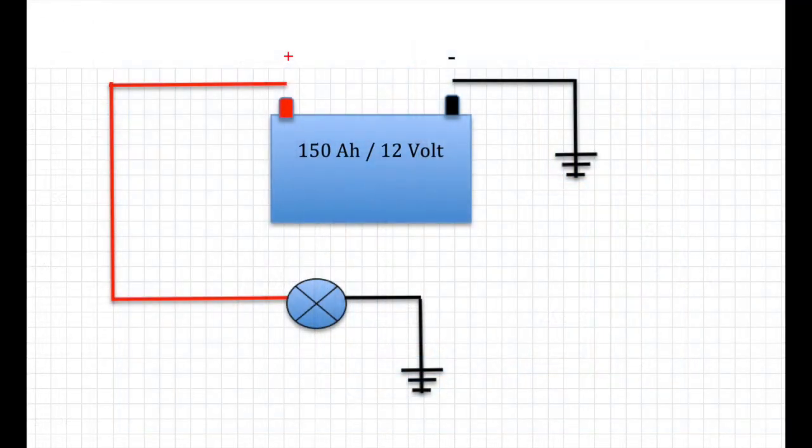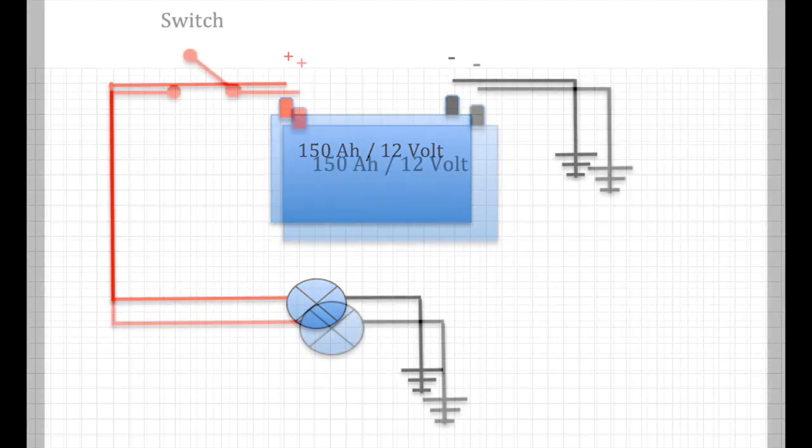Now we said that electricity flows in circuits but we don't always draw the whole circuit. Look at this one. We haven't drawn the return path for the negative. And that's because it's easier to draw and less complicated. You'll quite often find circuits drawn like this. Where the negative returns to ground or the ground is common. Either way the circuit is still complete, it's just not fully illustrated.